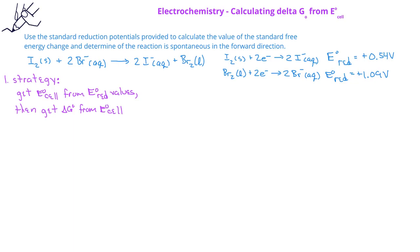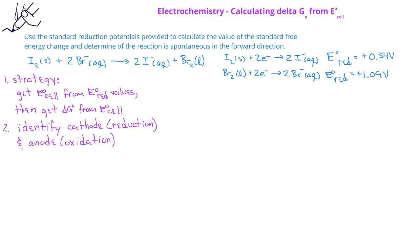We begin by identifying the cathode (reduction half reaction) and the anode (oxidation half reaction). For the reaction as written, the cathode or reduction half reaction is solid iodine reacting with two electrons to produce two iodide ions. At the same time, the anode or oxidation half reaction is two bromide ions in the aqueous phase producing bromine liquid and two electrons.